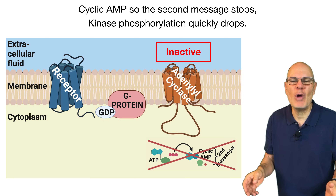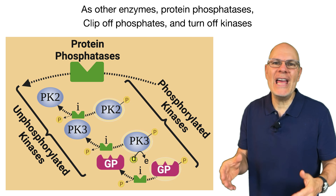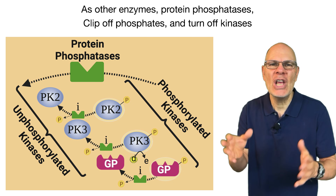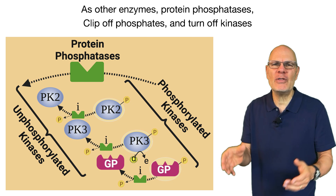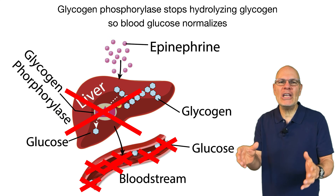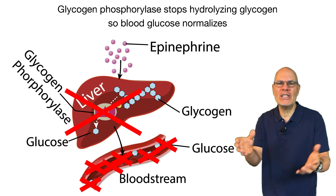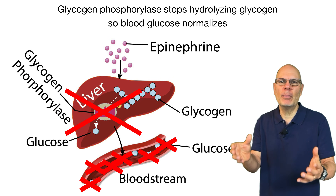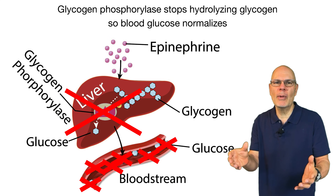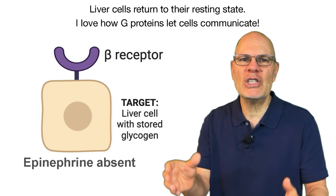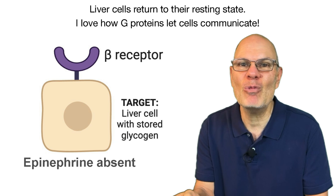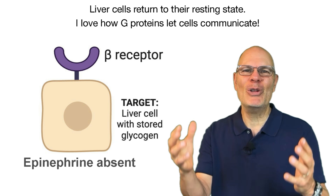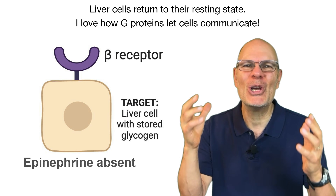Bound to GDP, the G-protein no longer stimulates adenylyl cyclase, which no longer creates cyclic AMP. So the second messenger stops, and kinase phosphorylation quickly drops, as other enzymes — protein phosphatases — clip off phosphates and turn off kinases. Glycogen phosphorylase stops hydrolyzing glycogen, so blood glucose normalizes.